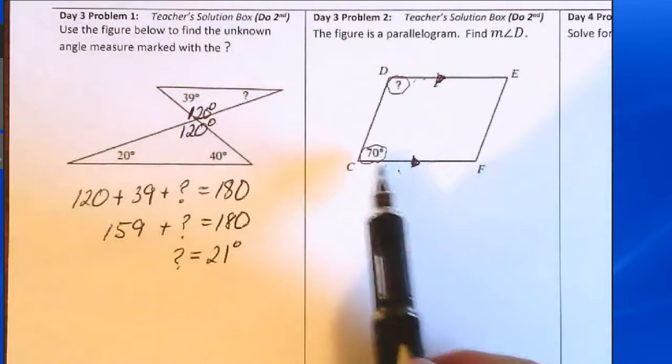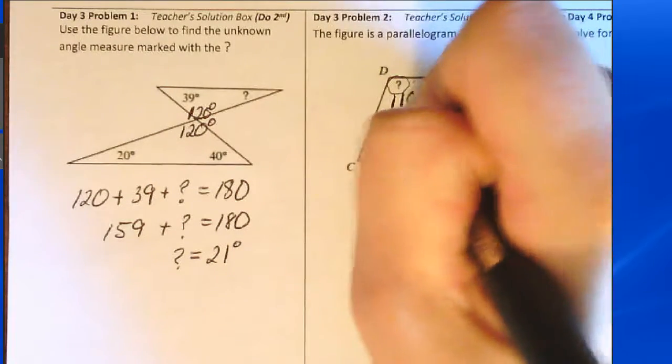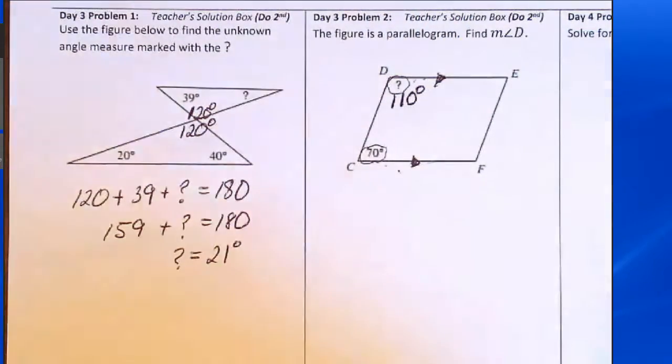That means they add up to 180. So if this is 70 degrees, then this one must be 110 degrees because 110 plus 70 is 180.